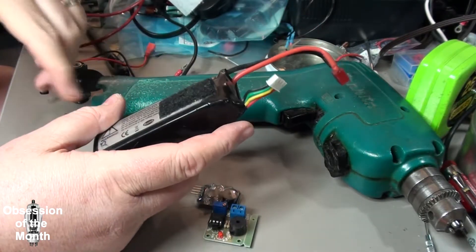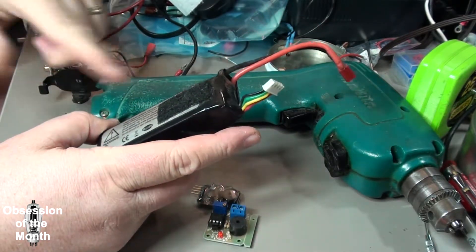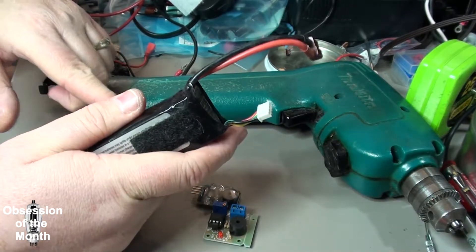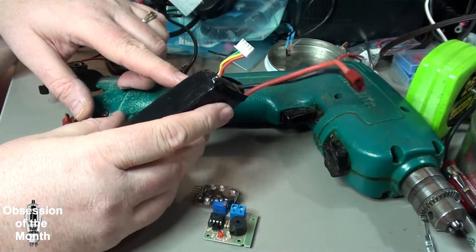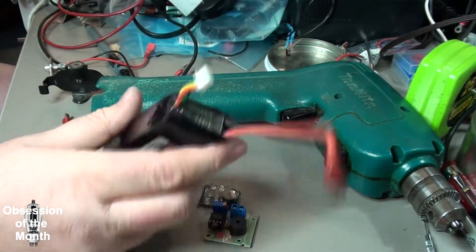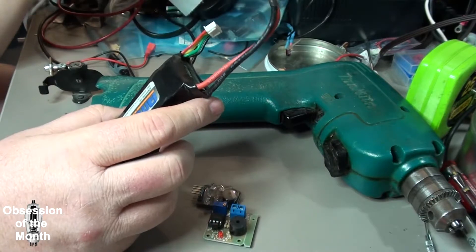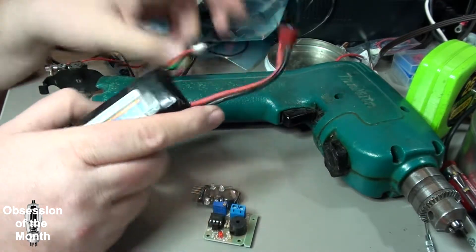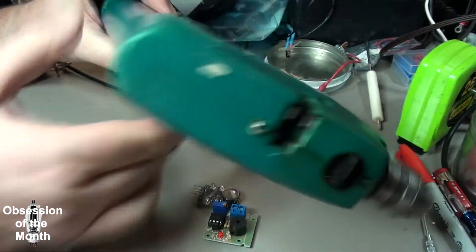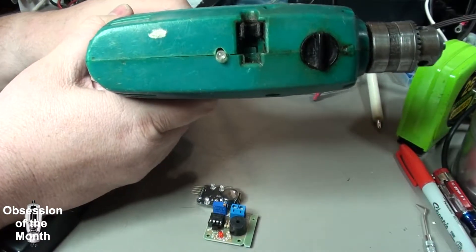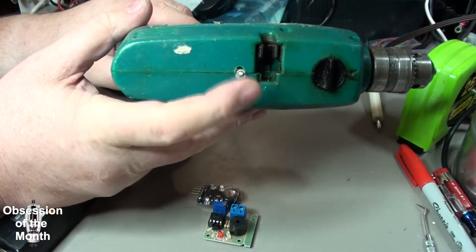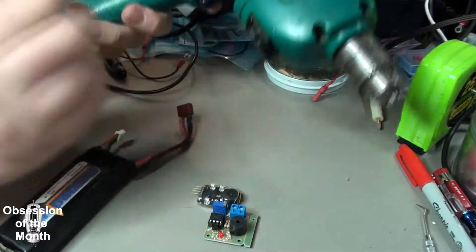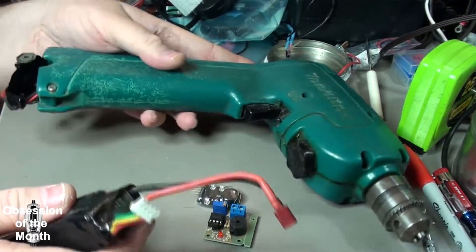I set it so it was 3 volts so that hopefully none of the three cells would get below 3 volts each. And the way it worked is that when the battery voltage got too low this light would come on and then the alarm was supposed to sound.